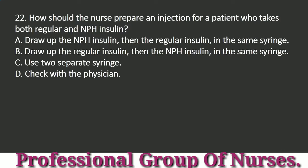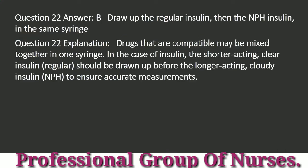Question 22: How should the nurse prepare an injection for a patient who takes both regular and NPH insulin? a. Draw up the NPH insulin, then the regular insulin, in the same syringe. b. Draw up the regular insulin, then the NPH insulin, in the same syringe. c. Use two separate syringes. d. Check with the physician. Answer: b. Draw up the regular insulin, then the NPH insulin, in the same syringe. Explanation: Drugs that are compatible may be mixed together in one syringe. In the case of insulin, the shorter-acting, clear insulin (regular) should be drawn up before the longer-acting, cloudy insulin (NPH) to ensure accurate measurements.